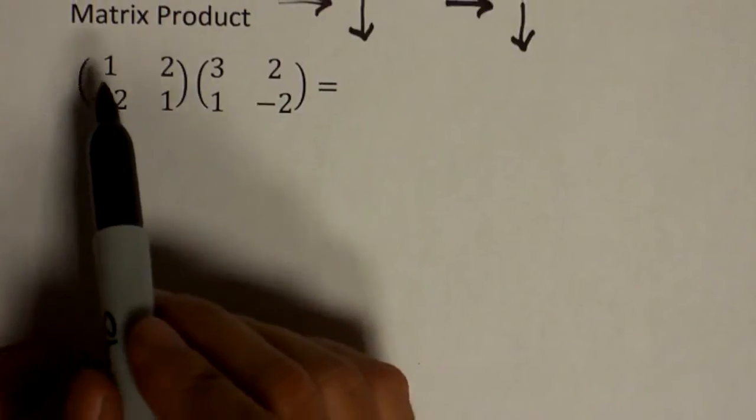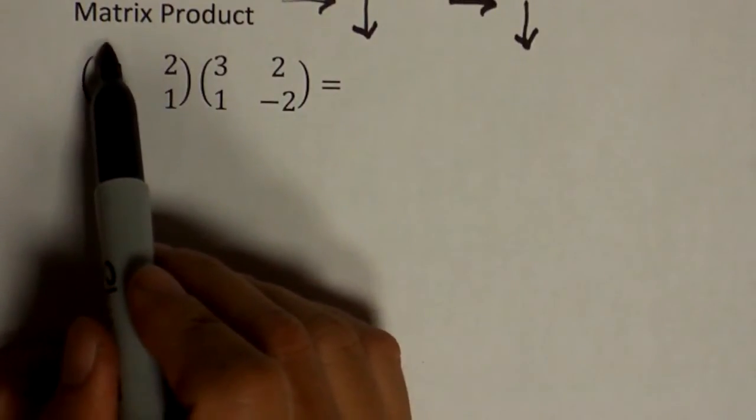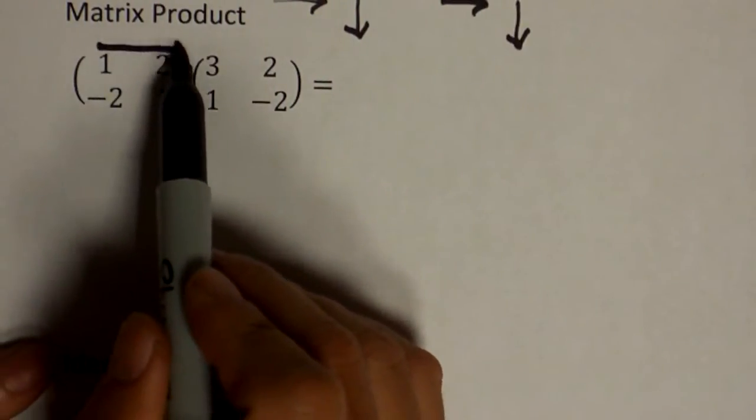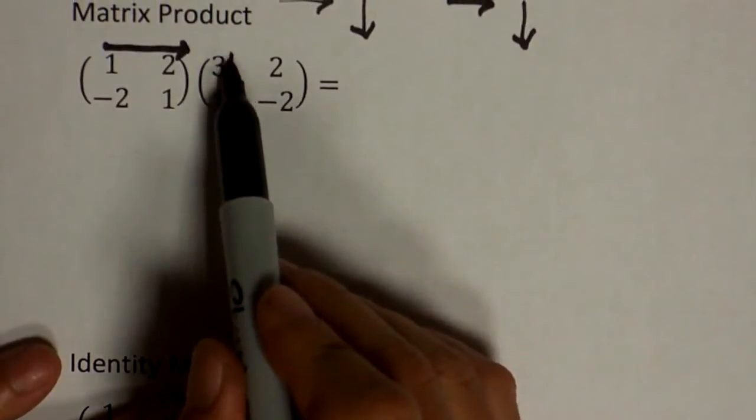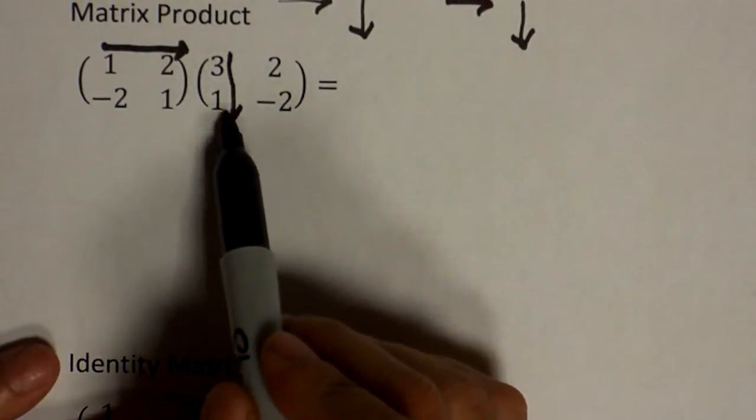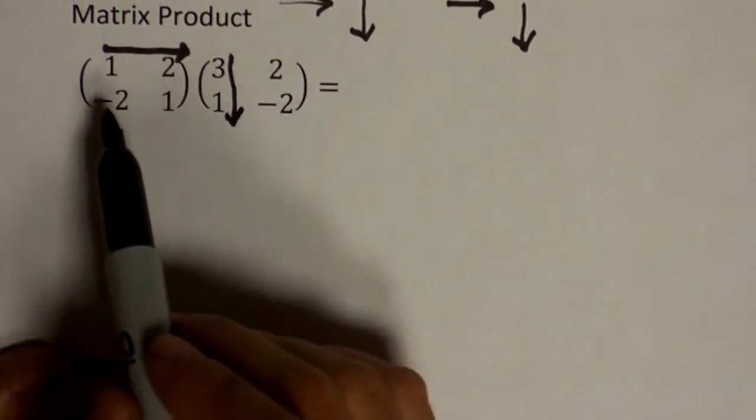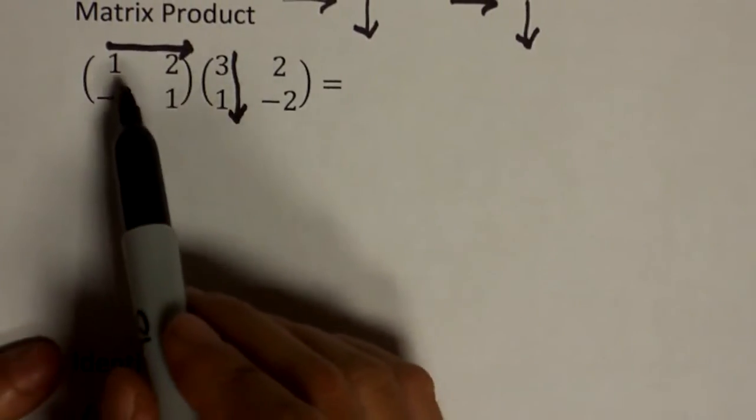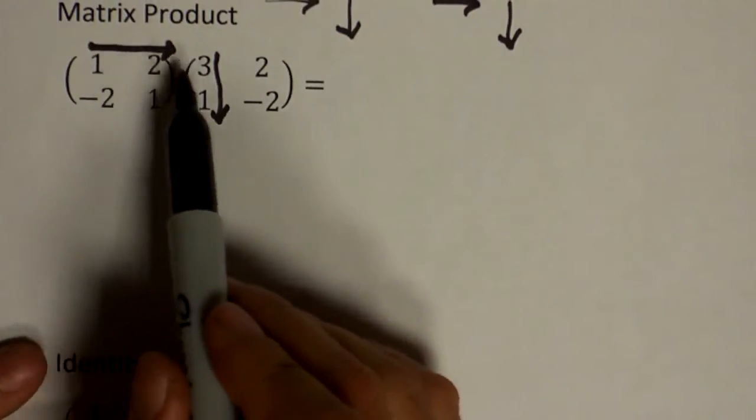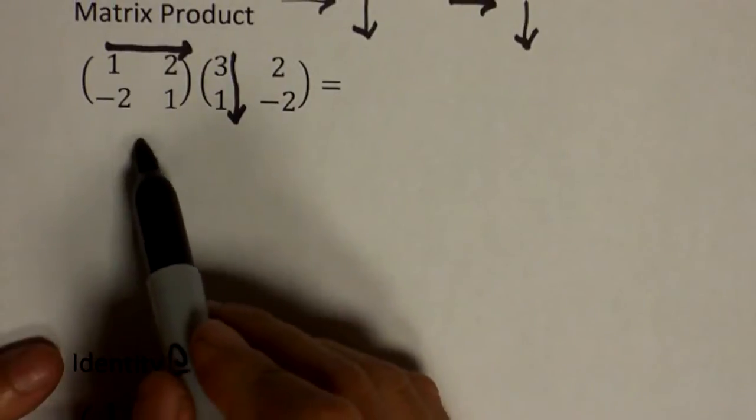So what do you mean by across, down? So you take a row, do across. Take a column of the second matrix, do down. And once you pick a row and a column, you multiply their first element by first element. It's one times three.